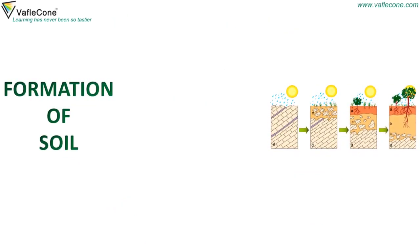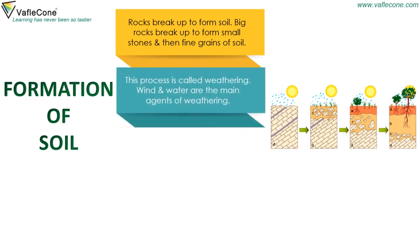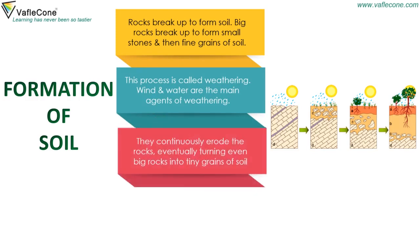Formation of Soil. Rocks break up to form soil. Big rocks break up to form small stones and then fine grains of soil. This process is called weathering. Wind and water are the main agents of weathering. They continuously erode the rocks, eventually turning even big rocks into tiny grains of soil.